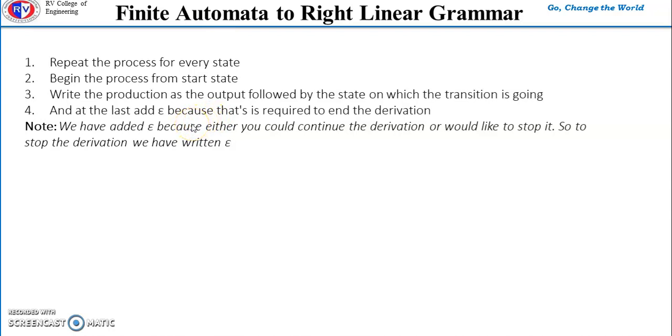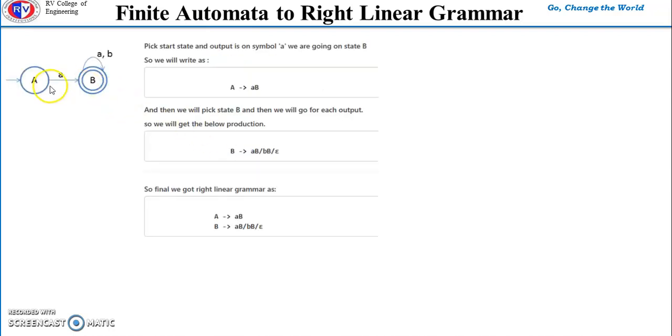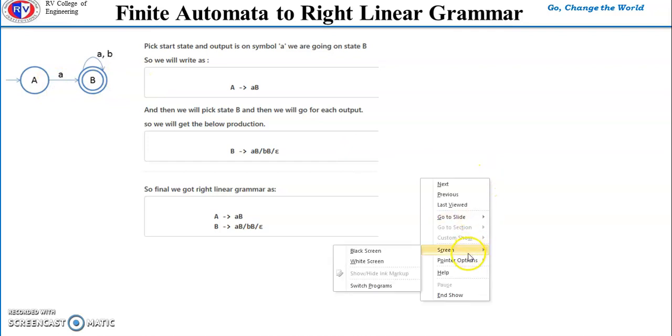Let's take one example. Here we have two states A and B. A is the start state and B is the final state.